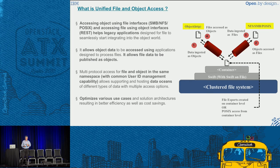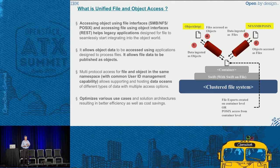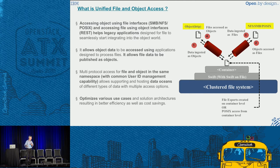What is unified file and object access? This may be a review for a lot of people, but it's the idea of being able to access my data from the object interface or from the file interface — it shouldn't matter. On the right we've got a diagram that shows data coming in as an object, being ingested as an object. It comes into the Swift container and once it's there it can be consumed either from the Swift interface or from the file interface. Item three on the right-hand side shows the data is read by the file side — that can be NFS, SMB, or POSIX.